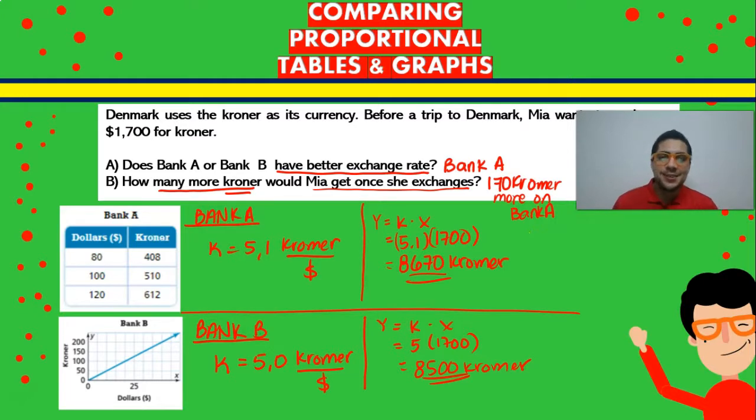Now guys, this problem was very easy as you can tell. In the first bank, which is Bank A, it was a table, so you just divide y by x, and you find the constant of proportionality, which was 5.1. And then on the second one you get the graph. In the graph, you choose any point from the graph, you find the value of y and the value of x, and then you divide that value of y by x, and that gives you in this case 5. Now because it's 5 and they were asking you which one had the better exchange rate, we're going to choose Bank A, which is going to give you 170 kroner more than if you exchange it on Bank B. So that's it guys, try solving it again, try doing it on your own and practice, because that's the key to success and to understanding proportional tables and graphs. See you in the next one guys, bye.